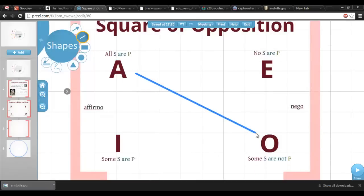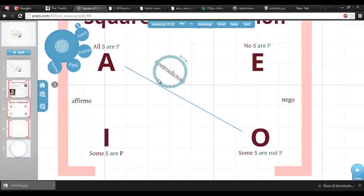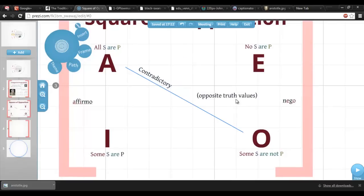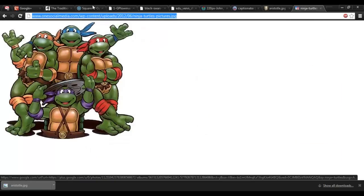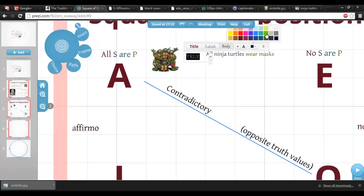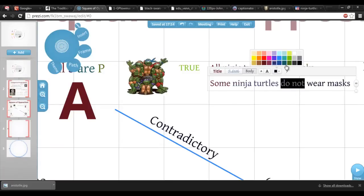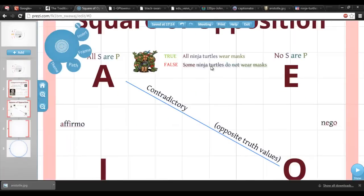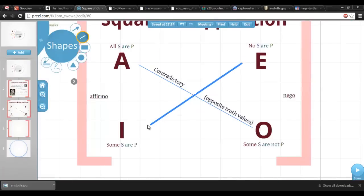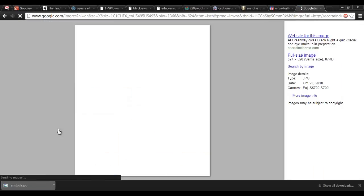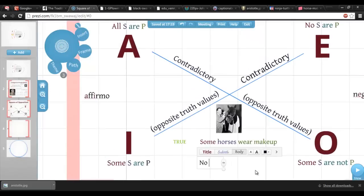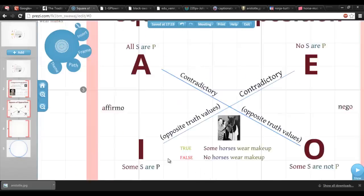We already know one of the relationships in this square. A and O sentences are contradictory, so we can draw a line to indicate that relation. Contradictory sentences always have opposite truth values. No matter what terms we substitute for S and P, if we know the truth value for one, we immediately know the truth value for the other. The same relationship holds between the I and E corners. If we know the truth value of an I sentence, we also know the corresponding E sentence has the opposite truth value. These are just the contradictory relationships across the middle of the square.